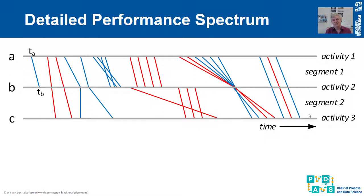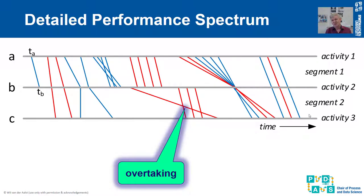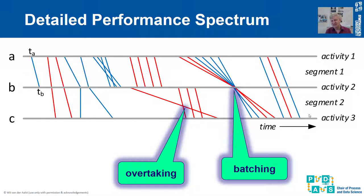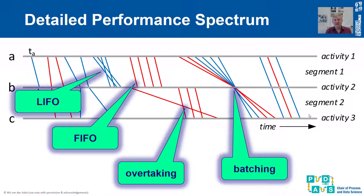We would like to visualize this and color the lines based on all kinds of perspectives. What performance spectra show that normal aggregate statistics do not show are phenomena like overtaking — as you can see from the crossing lines — or batching, where things start at different times but another activity handles all the different instances at exactly the same time. We can also see last-in-first-out and first-in-first-out ordering disciplines: a last-in-first-out ordering discipline is visible when lines start crossing each other.